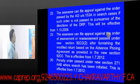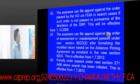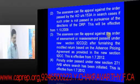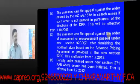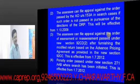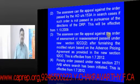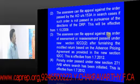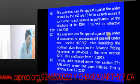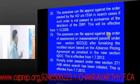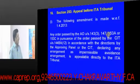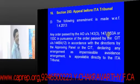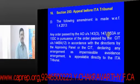The assessee can also file an appeal against an order of assessment or reassessment passed under new section 92CD(2), after furnishing the modified return based on advance pricing agreements. Additionally, a penalty order passed under section 271AAB where a search has been initiated is also appealable before the Commissioner of Income Tax Appeals. Next: what appealable matters have been added to the ITAT's list, effective from 1.4.2013.